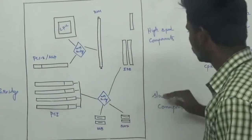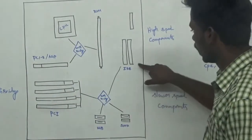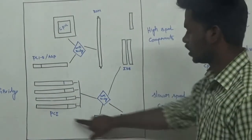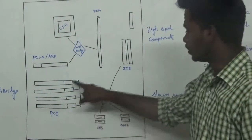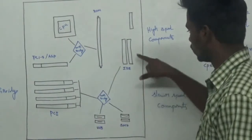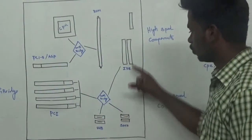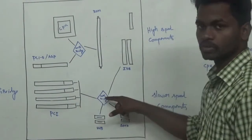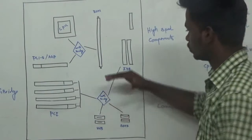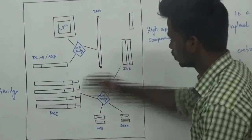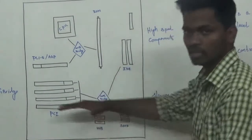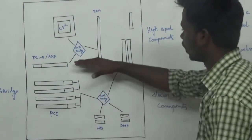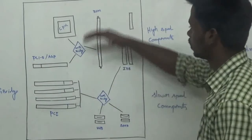This is the low speed component: the IDE, SATA, USB, and DC. This is the South Bridge. South Bridge handles the southern side of the parts. North Bridge handles the north side of the parts.